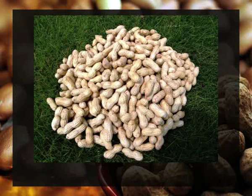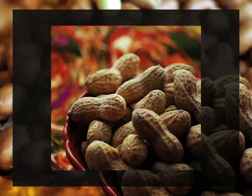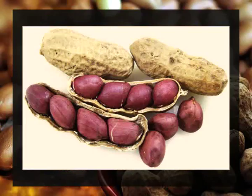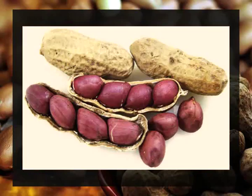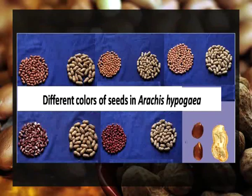The fruit is an indehiscent legume, oblong, inflated, 2 to 5 by 1 to 1.3 centimetres, thick-walled, reticulate-winged with 1 to 4, rarely 6 seeds. Seeds are oblong to irregularly ovoid, 5 to 10 mm in diameter, with a thin testa of various colours like pink, red, purple, brown, yellow, or white, sometimes marked with small purple patches.